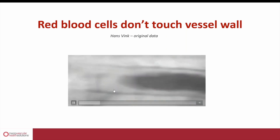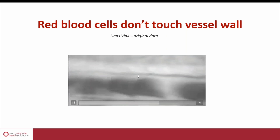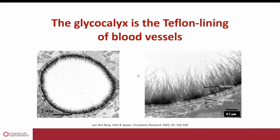When we zoom in even further into this space with an electron microscope, you get images like these. This is a cross-section of one of these capillary blood vessels in myocardial tissues.